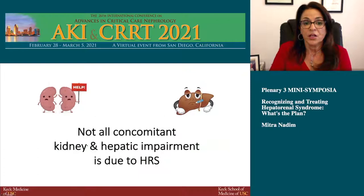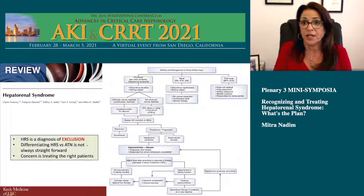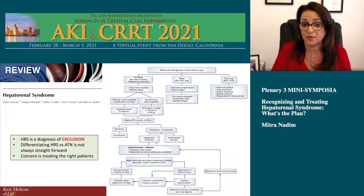One thing to keep in mind is that not all kidney injury in patients with liver disease is due to HRS. We have to work through the full workup — pre-renal, renal, or post-renal causes. For pre-renal cases, once volume depletion is excluded, it comes down to whether the patient has ATN or hepatorenal syndrome. This can be very difficult — it is a diagnosis of exclusion — and it's important because the treatment of these two conditions is completely different.